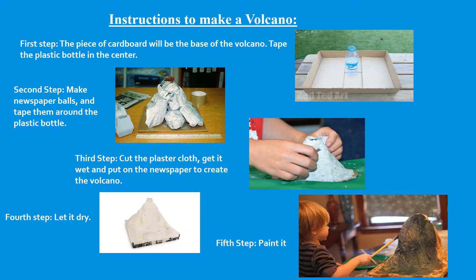Now let's get started on making the volcano. The first step is to use the piece of cardboard, which will be the base of the volcano. Tape the plastic bottle in the center and make sure it's nice and steady. The second step is to make newspaper balls and tape them all around the plastic bottle, including the base.